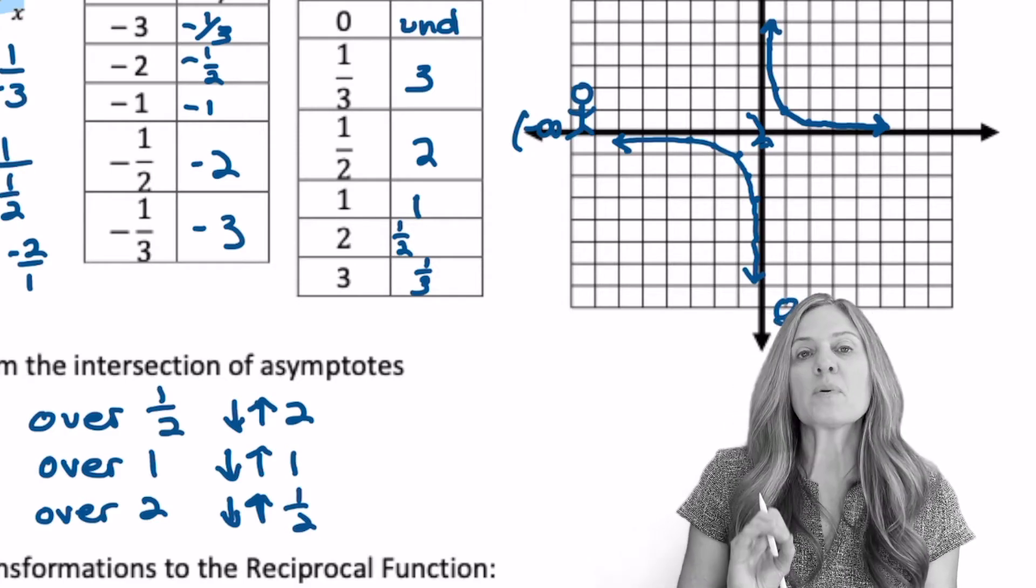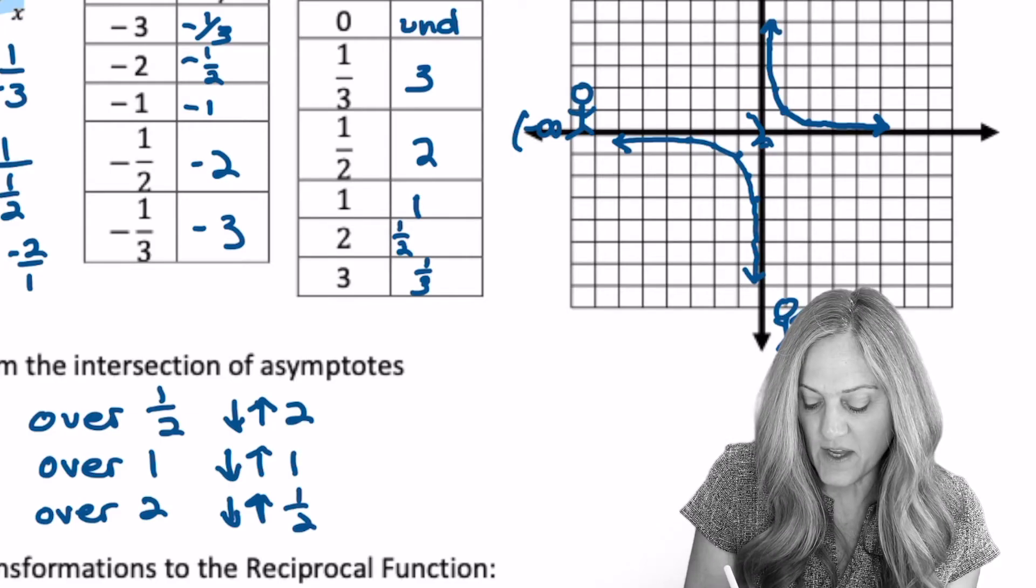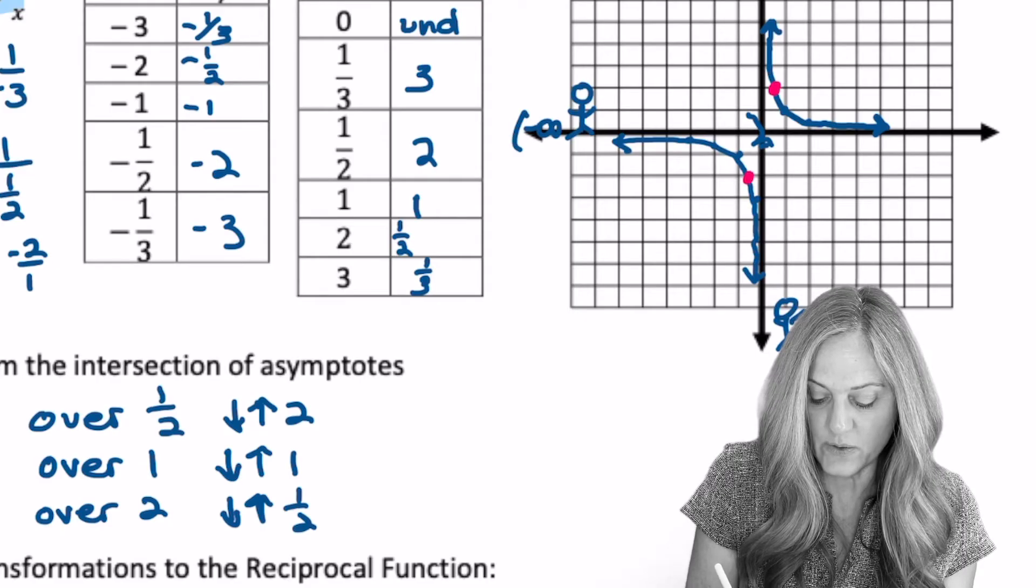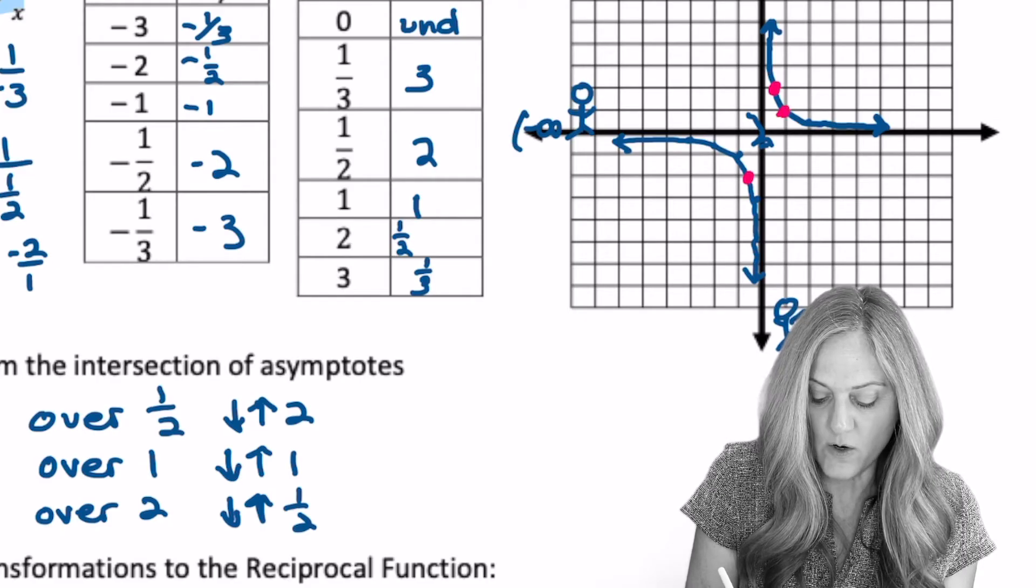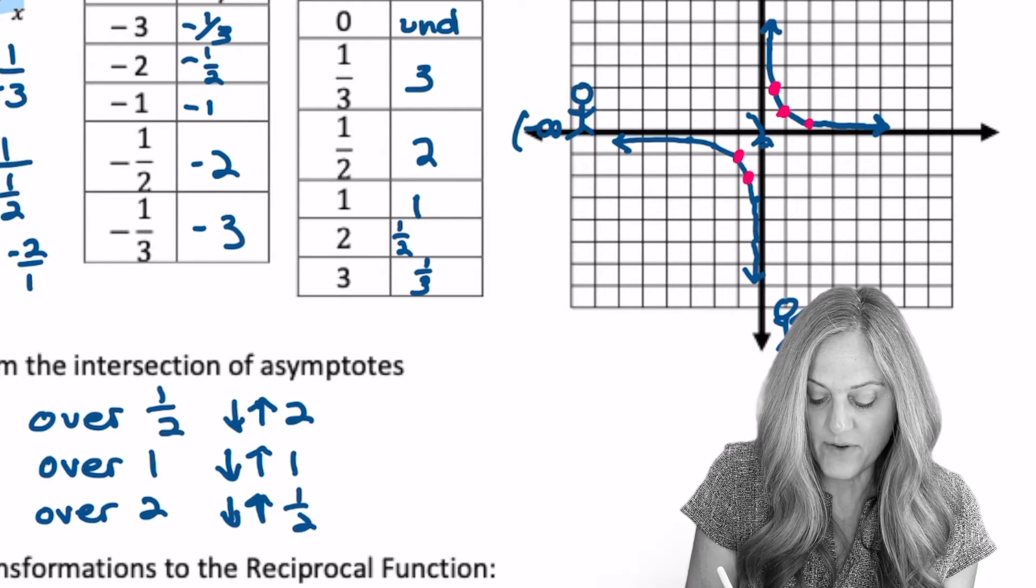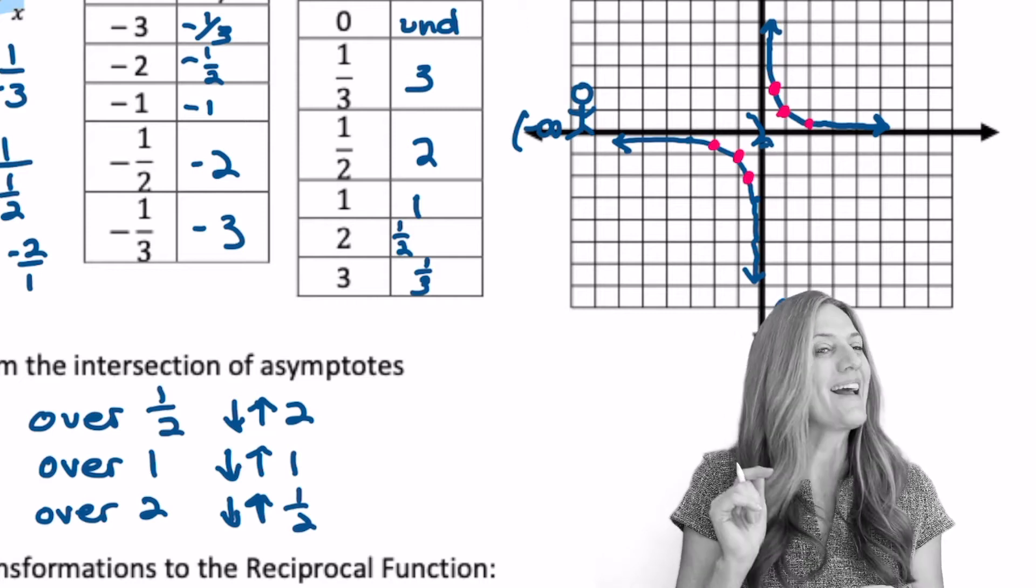Remember, it's easier to remember the pattern points with our parent functions. So let's look at it one more time. If I go over a half, I go up 2. Over a half, down 2. Over 1, up 1. Over 1, down 1. And over 1 half, over 2. Up 1 half, over 2. Down 1 half. Remember those pattern points. It helps us.